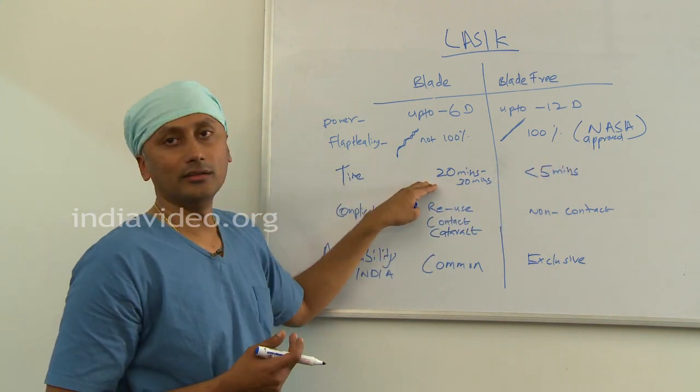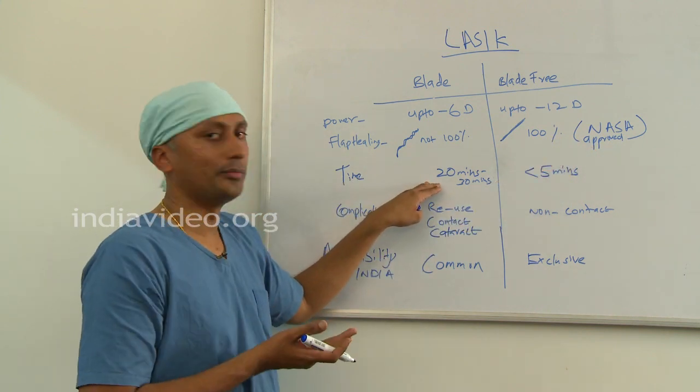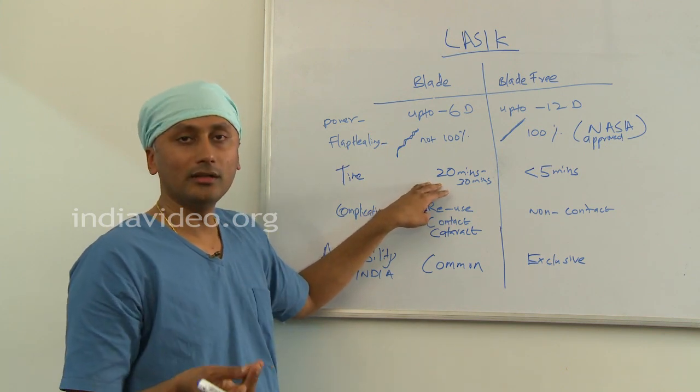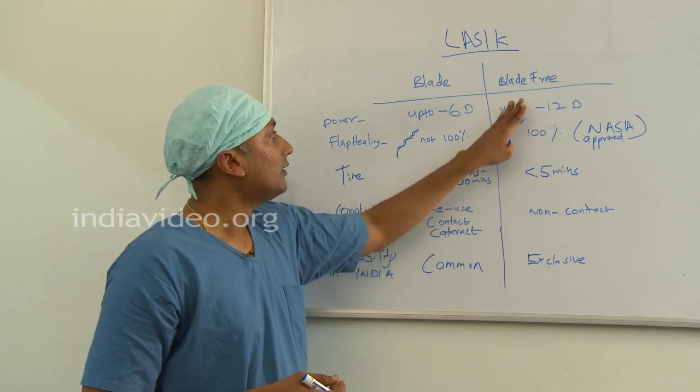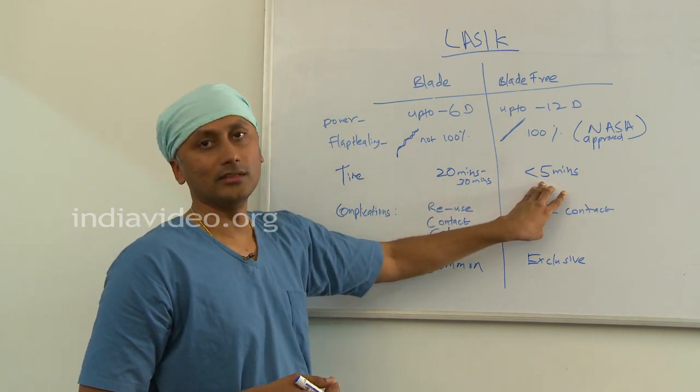Because there is a metal blade that you have to use to remove the corneal flap, you have to attach the blade, remove the blade, the time taken is 20 to 30 minutes. Whereas in 100% laser, it is less than 5 minutes.